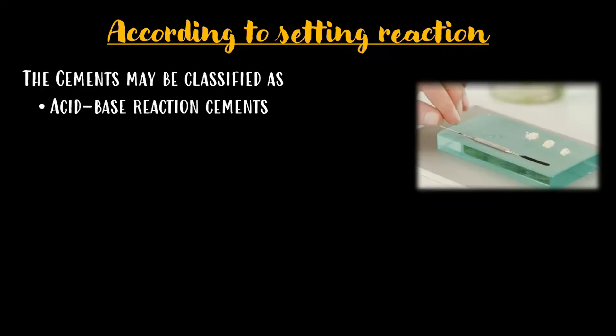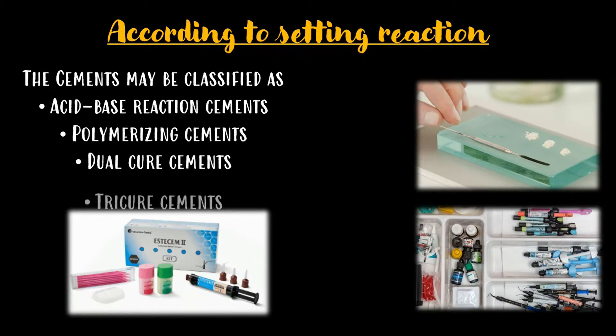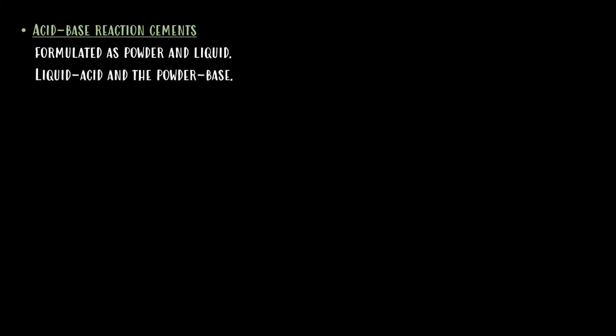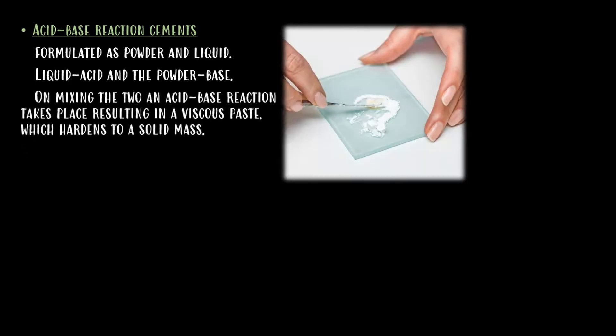According to the setting reaction, cements may be classified as acid-base reaction cements, polymerizing cements, dual cure cements, and tricure cements. Acid-base reaction cements are formulated as powder and liquid. The liquid consists of the acid and the powder is composed of a base. On mixing the two, an acid-base reaction takes place resulting in a viscous paste which hardens to a solid mass.